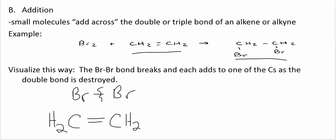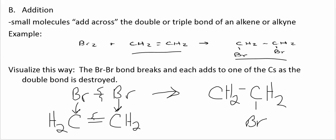So we're gonna break the bromine bond. We're gonna break the double bond and we're gonna add the bromine to those carbons to get the product over here. So small molecules adding across a double or a triple bond, breaking the double bond and adding to those carbons.